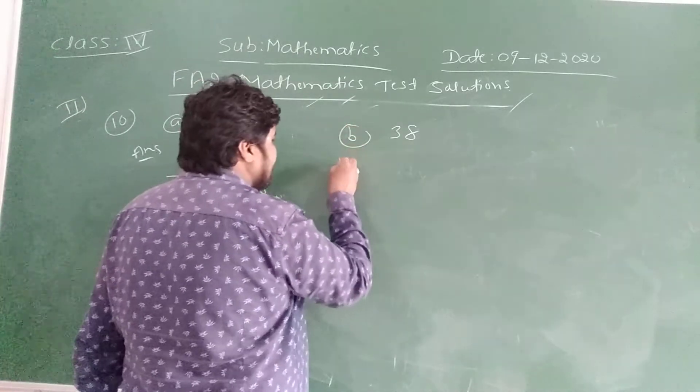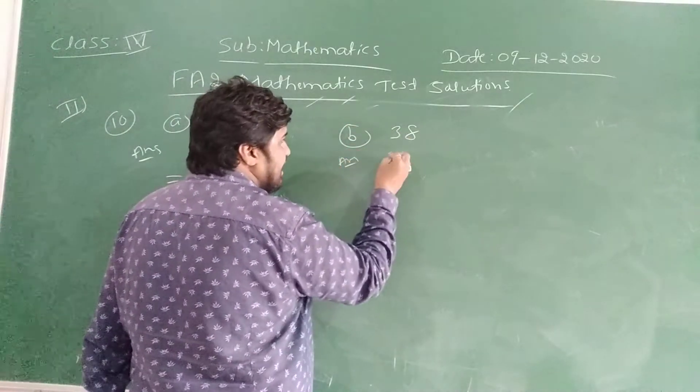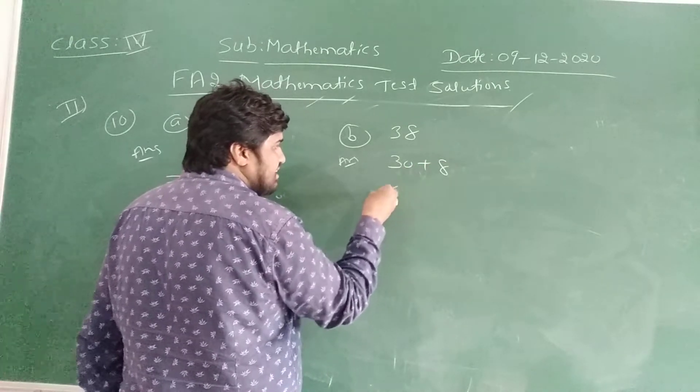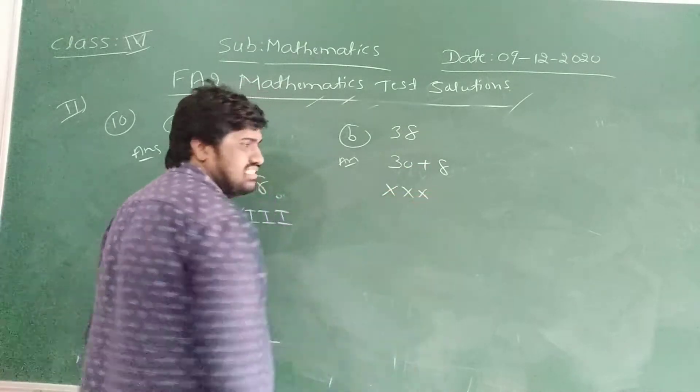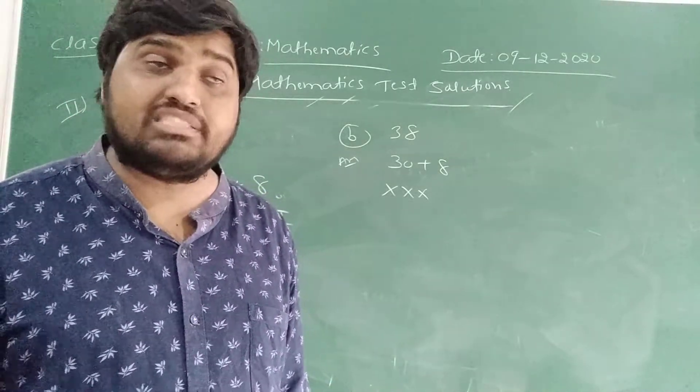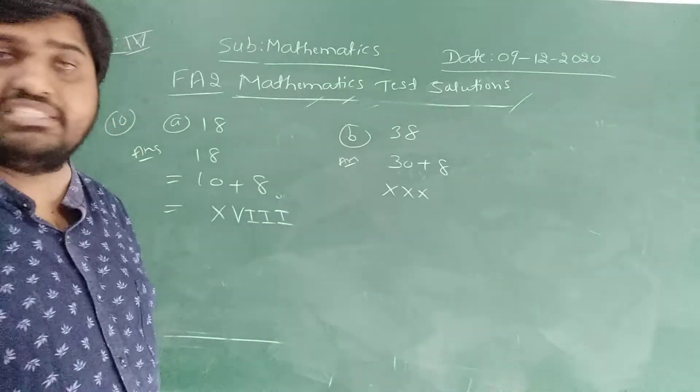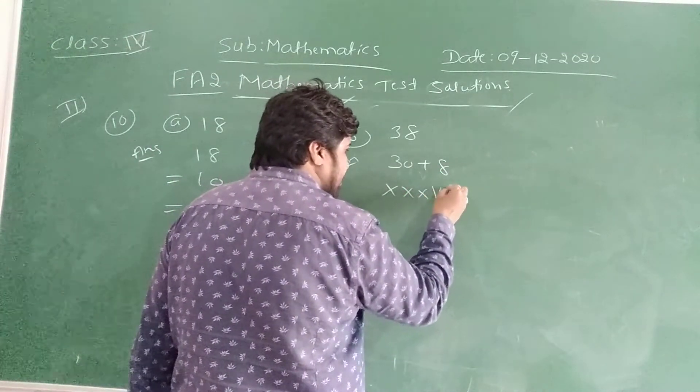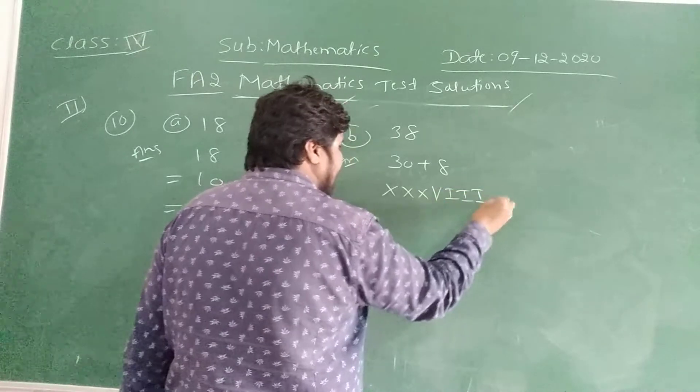Similarly, 38 is also the same. 38 can be distributed as 30 plus 8. 30 can be written as X X X. X means 10, X X means 20, X X X means 30. And 8 means V I I I. That's it.